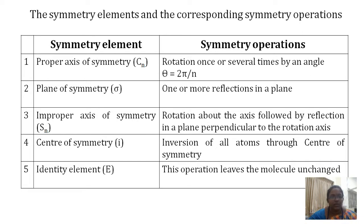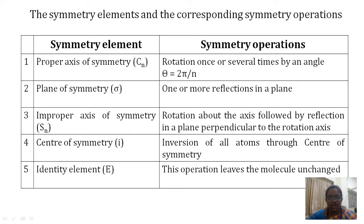There are 5 symmetry elements. First is the proper axis of symmetry, denoted Cn, which corresponds to rotation once or several times by angle θ = 2π/n. Second is the plane of symmetry, denoted σ, corresponding to one or more reflections in a plane. Third is the improper axis of symmetry, Sn, corresponding to rotation followed by reflection in a perpendicular plane. Fourth is the center of symmetry, i, corresponding to inversion of all atoms through the center. Fifth is the identity element, E, which leaves the molecule unchanged.